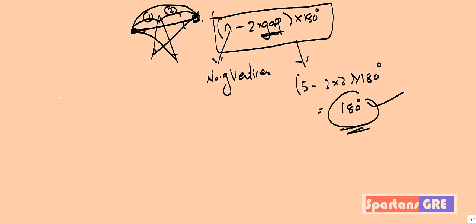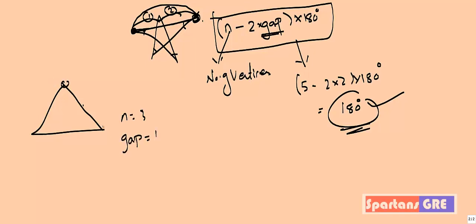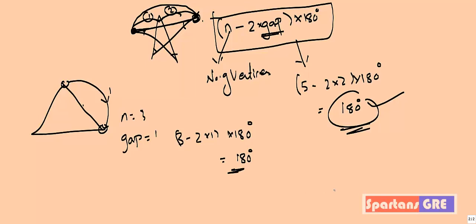You can cross-check: in a triangle, the total internal angle is 180 degrees. Applying the formula to a triangle: n = 3, gap = 1 (because it's a straight line — just one jump from end to end). So (3 minus 2×1) × 180 = 1 × 180 = 180 degrees. Correct!